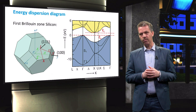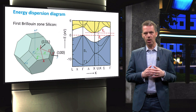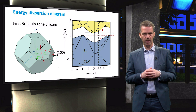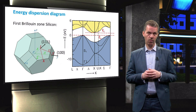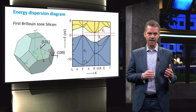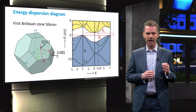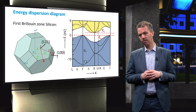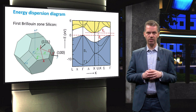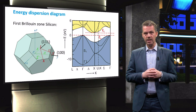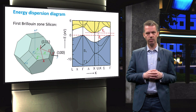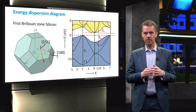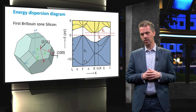Solving the Bloch wave functions, an energy dispersion diagram for silicon is obtained as shown on the right. The bandgap of the material, here in white, can be defined as the energy difference between the maximum of the valence band EV and the minimum of the conduction band EC. However, when we take a closer look, these are not located at the same point on the reciprocal lattice. This has an important consequence for this material.